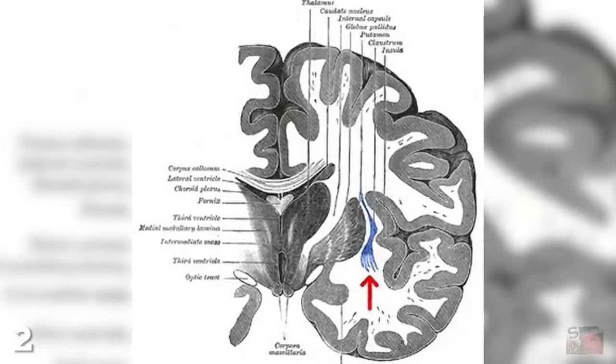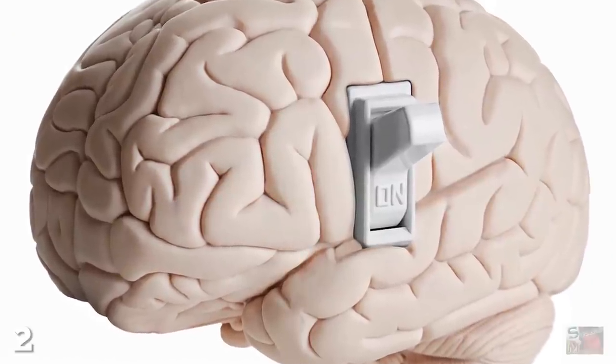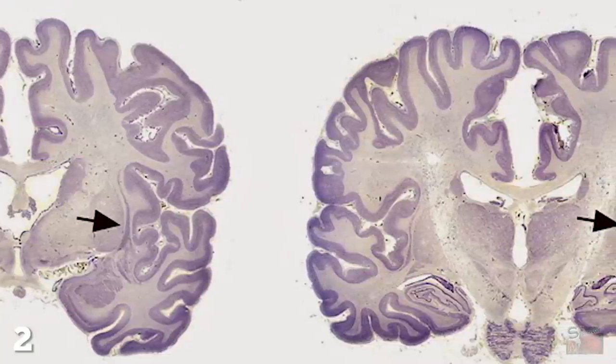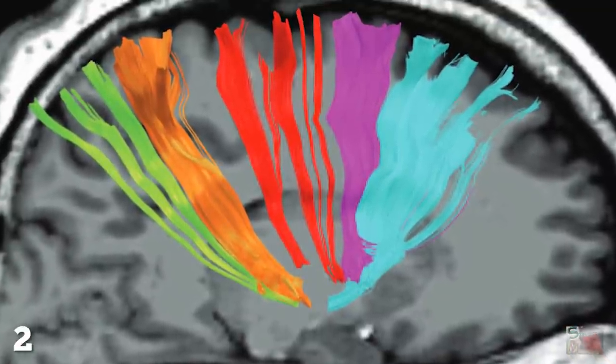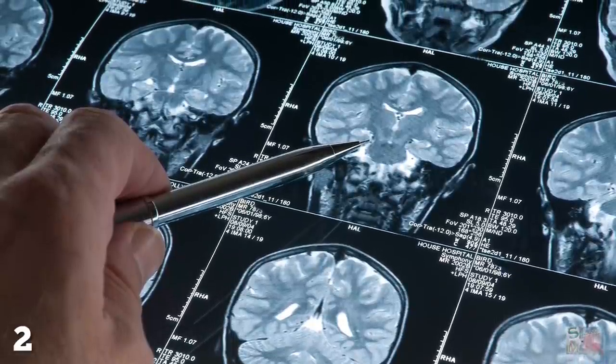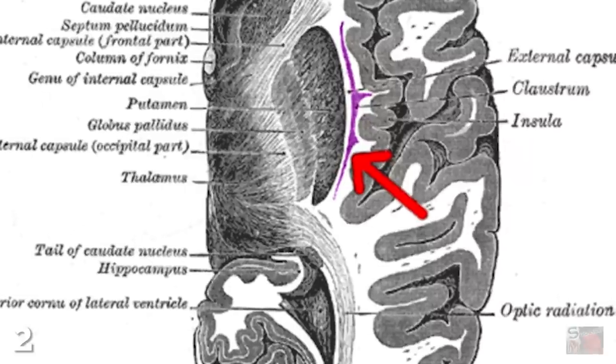At number two: the claustrum. In 2014, researchers at George Washington University discovered a consciousness flip switch deep within the brain. By stimulating a region known as the claustrum, they were able to make a female patient unconscious at the push of a button. She remained awake, just not aware. And this discovery offered further proof of what neuroscientists have been saying for decades: if consciousness is an orchestra, the claustrum is the conductor.